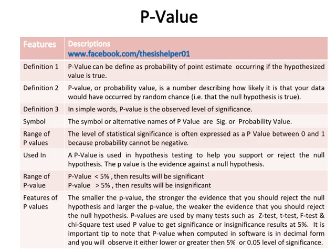The p-value is the evidence against a null hypothesis. If the range of p-value is less than 5%, then results will be significant, but if the range of p-value is greater than 5%, then results will be insignificant.